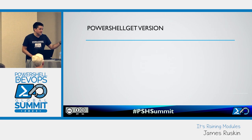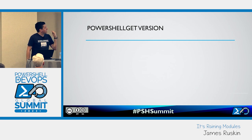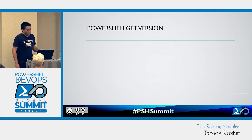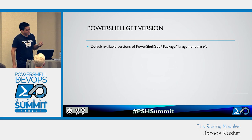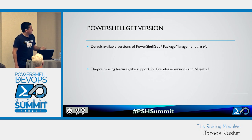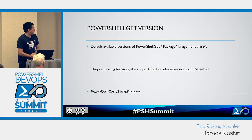Just to go back to that — PowerShell Get is potentially an issue. We've already mentioned it's problematic in that you have to run a beta version to use NuGet v3. The old version available in Windows by default is really quite old, similar to Pester — quite unlikely to be updated. You're actually missing features, such as support for pre-release versions in the currently installed version. And of course that beta has been in beta for a significant amount of time — there's no clear roadmap for release.